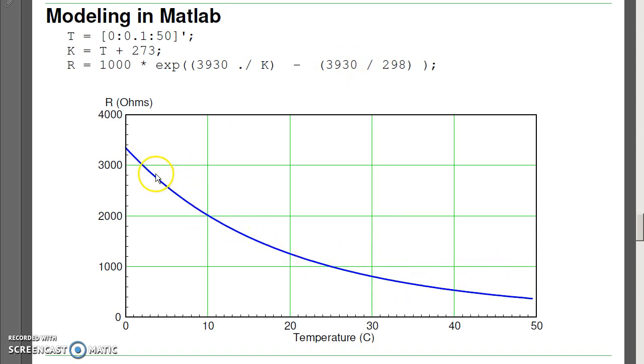Notice that it's highly nonlinear, and also it changes quite a bit. That's the nice thing about thermistors. There's a large change in resistance versus temperature, meaning if I can measure resistance, I can measure temperature.